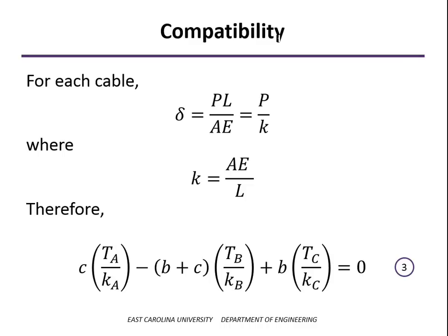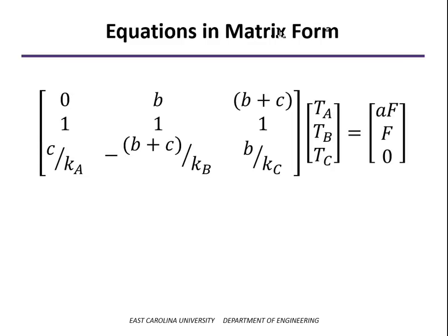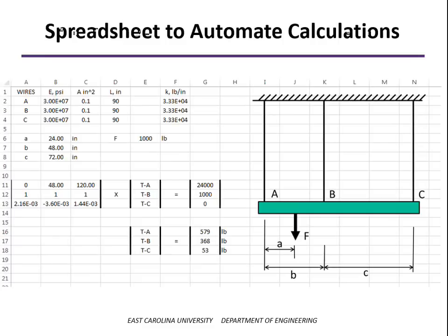And that becomes our third equation. And so in matrix form, here's what we have now with the coefficient matrix being in terms of the lengths B and C and the stiffnesses K-A, K-B, and K-C. So we're going to set this up into a spreadsheet. You can see up at the top, we have the parameters of each one of the wires and then the spring stiffness calculated for each one of those wires. Put in the distances A, B, and C, and the force. So the baseline case that we just looked at, there's our solution.